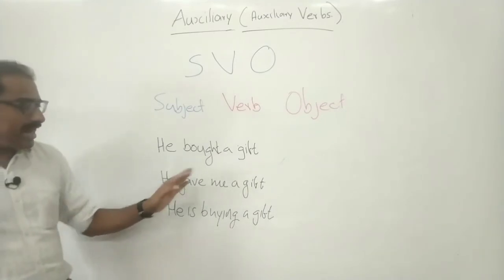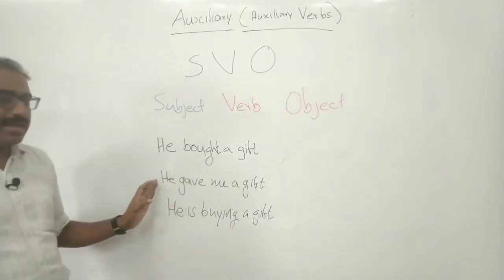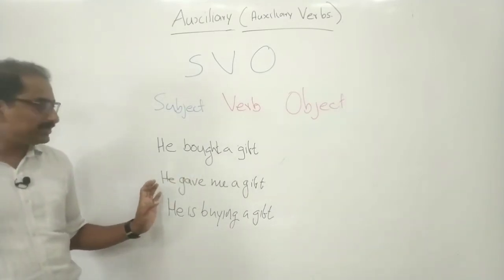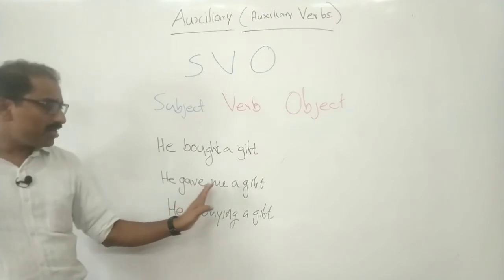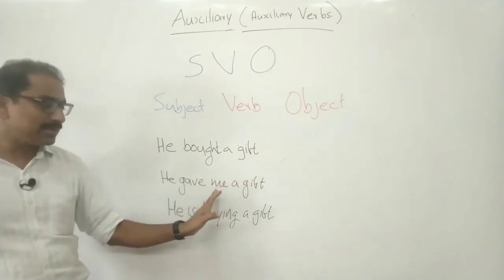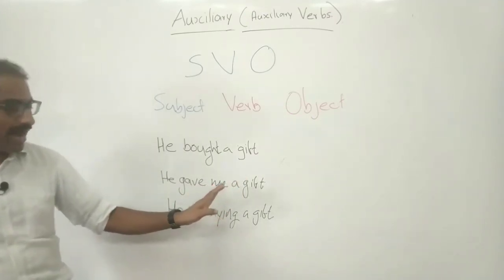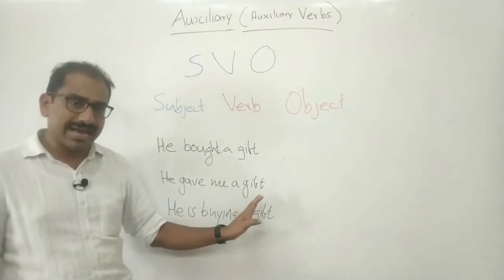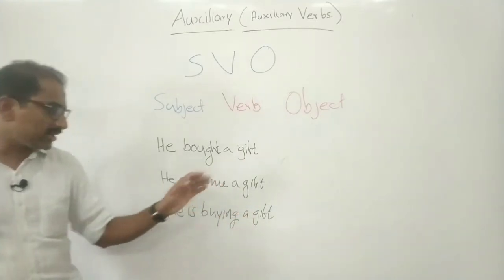Then, 'He gave me a gift.' He is the subject, gave is the verb, and the remaining parts are objects. Me is an indirect object, and gift is a direct object. A is an article.